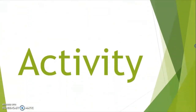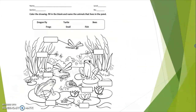Now the activity: write your name first, then your section, level, and number. Direction: color the drawing, fill in the blank, and name the animals that live in the pond. All the answers are in the big box. All you need to do is write or name the animals that live in the pond. Are you ready? All right. That's the end of our topic. I hope you enjoy class. Thank you, bye bye!